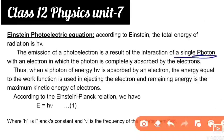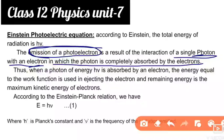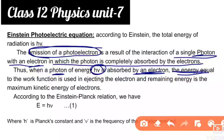The emission of a photoelectron is a result of the interaction of a single photon with an electron, in which the photon is completely absorbed by the electron. The energy equal to the work function is used for ejecting the electron, and the remaining energy becomes the maximum kinetic energy of the electron.